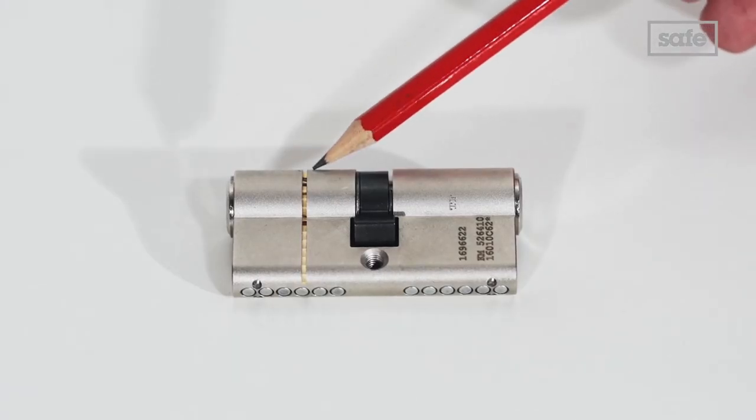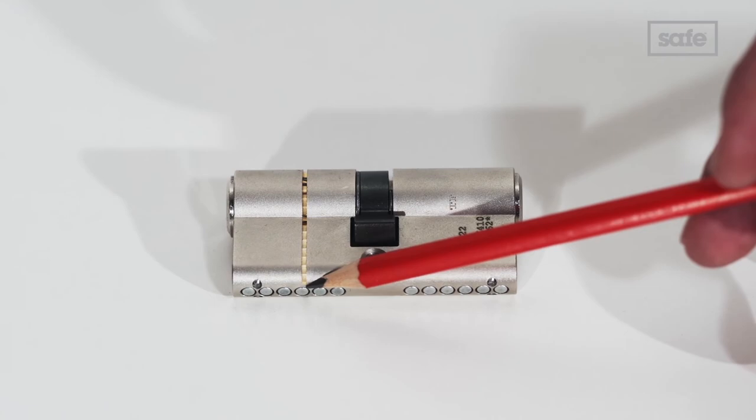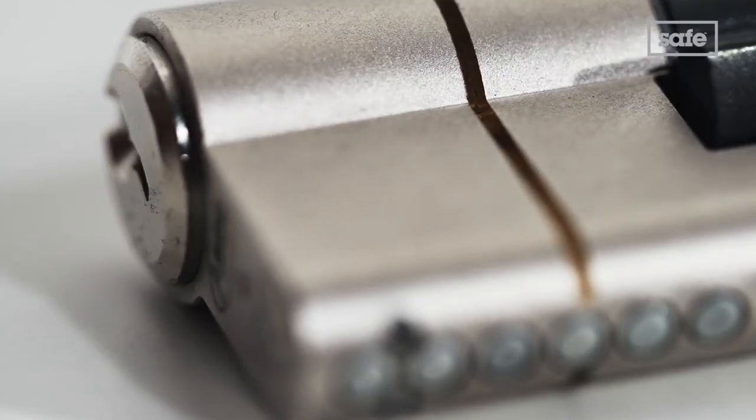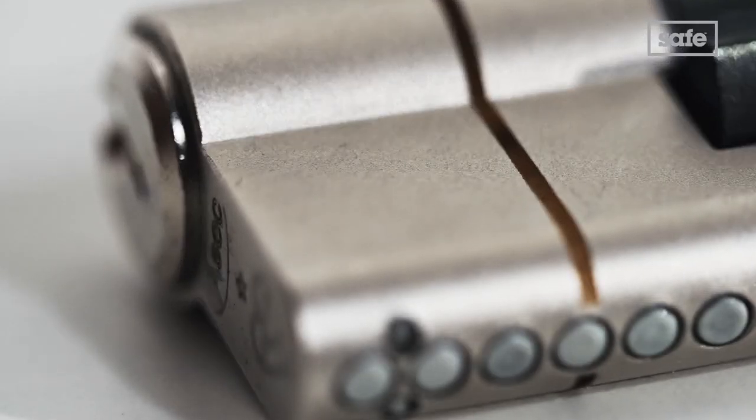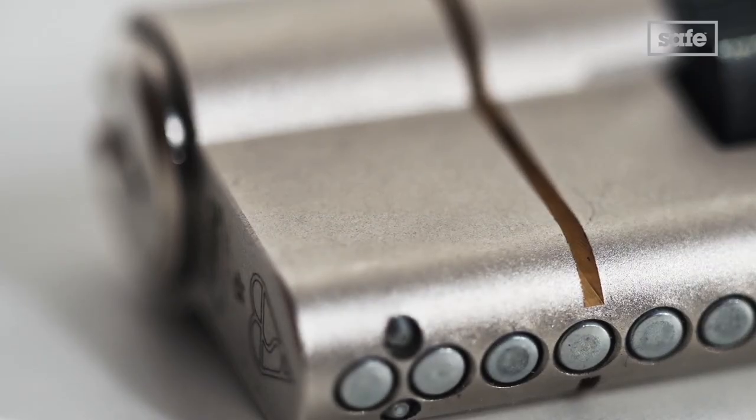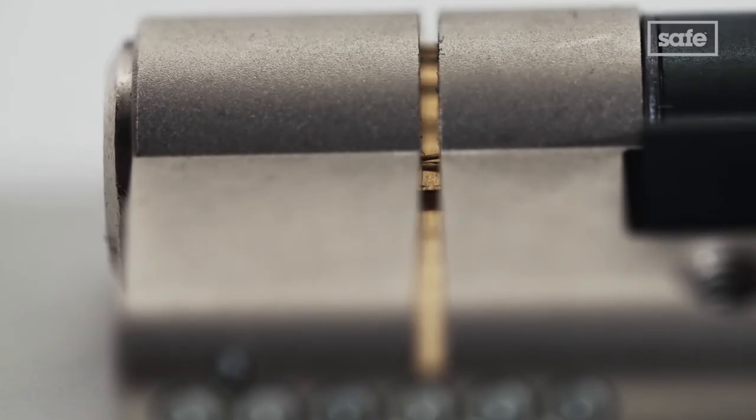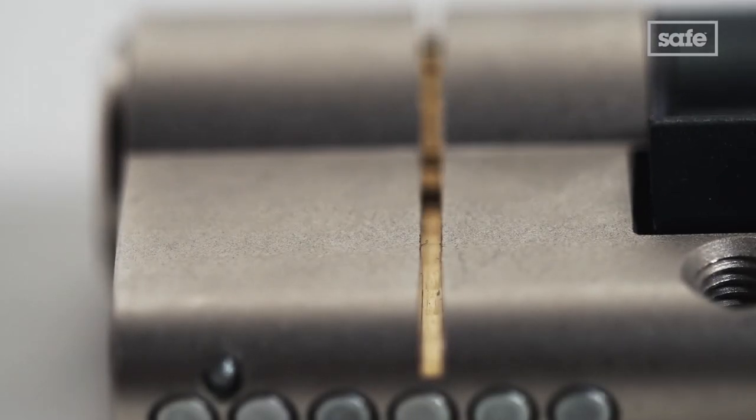The line you can see to the left side is called an anti-snap line, which offers extra security for your lock. If you have an anti-snap line, it will always need to be on the external side, dimension A, on the left.